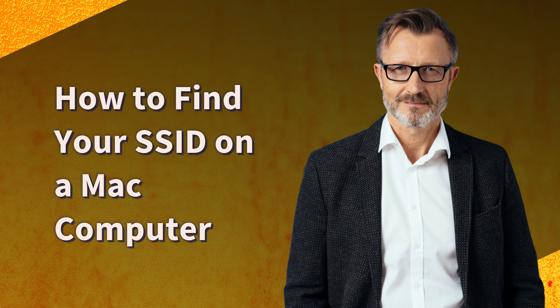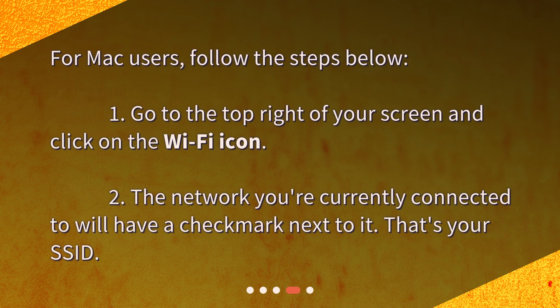How to find your SSID on a Mac computer? For Mac users, follow the steps below. 1. Go to the top right of your screen and click on the Wi-Fi icon. 2. The network you're currently connected to will have a checkmark next to it. That's your SSID.